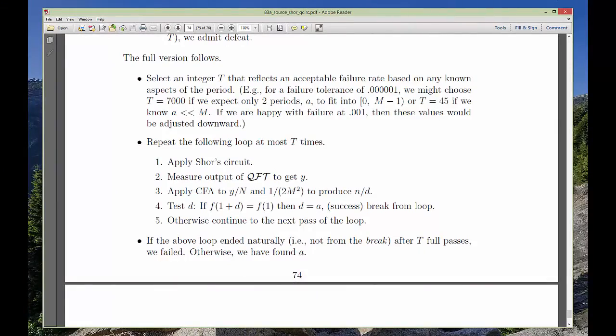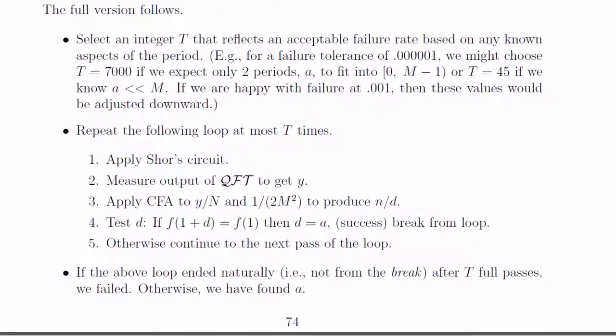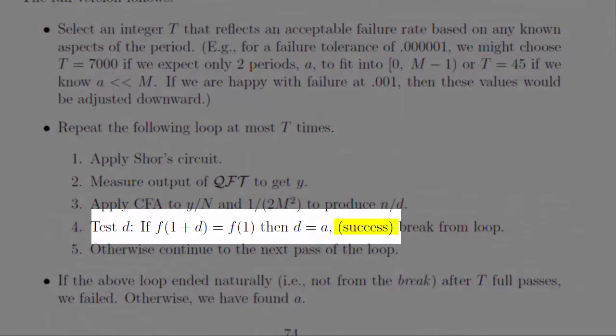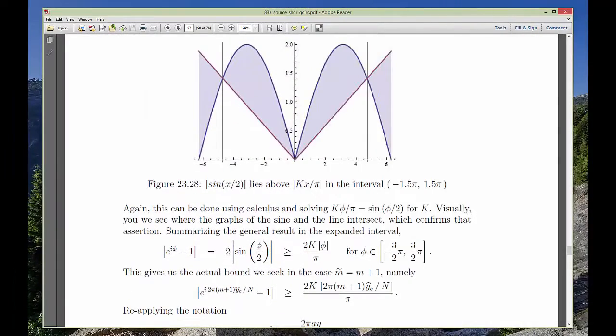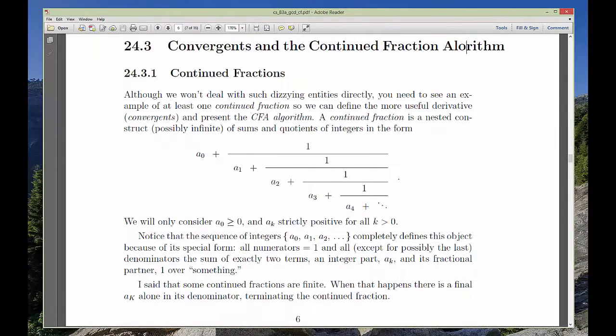If we can do that, and we can, we'll be able to get A with a constant time likelihood. The cost of success, though, is a substantial amount of differential calculus combined with a branch of number theory called continued fractions.